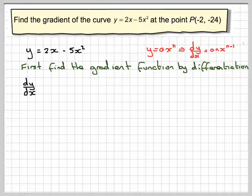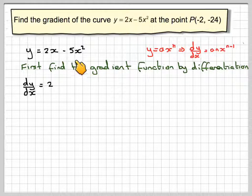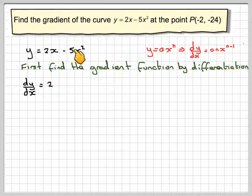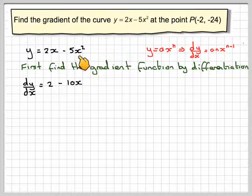So dy/dx in this case, because you've got 2x to the 1, it becomes 1 times 2x to the 0. x to the 0 is 1, so we just get a constant of 2. In the second case, you get 2 times 5, so 2 times minus 5, so it's going to be minus 10x. And if you reduce the power by 1, you're just going to get x to the 1.